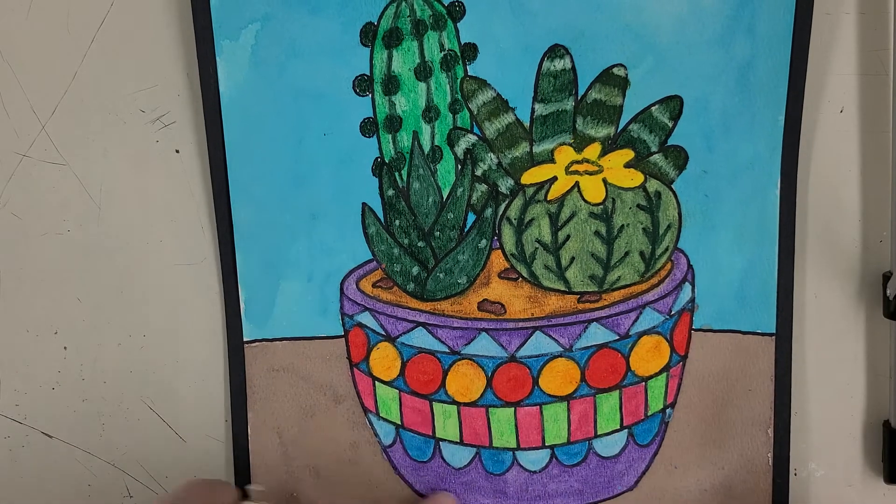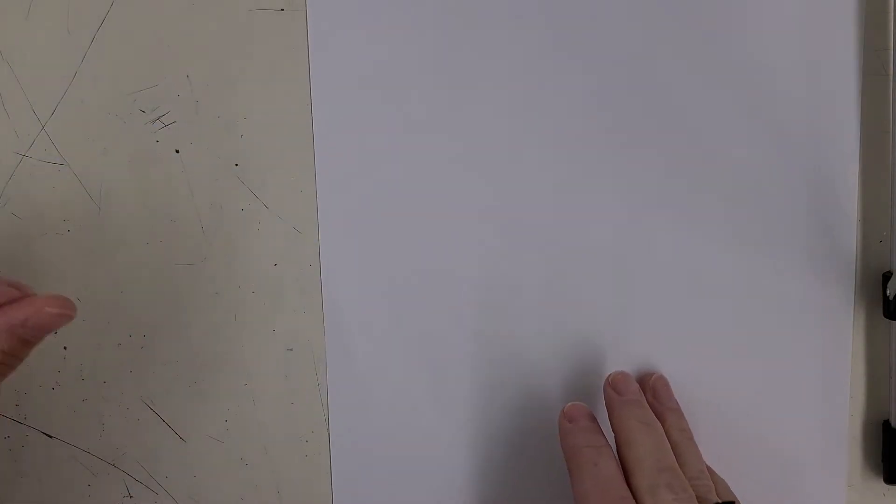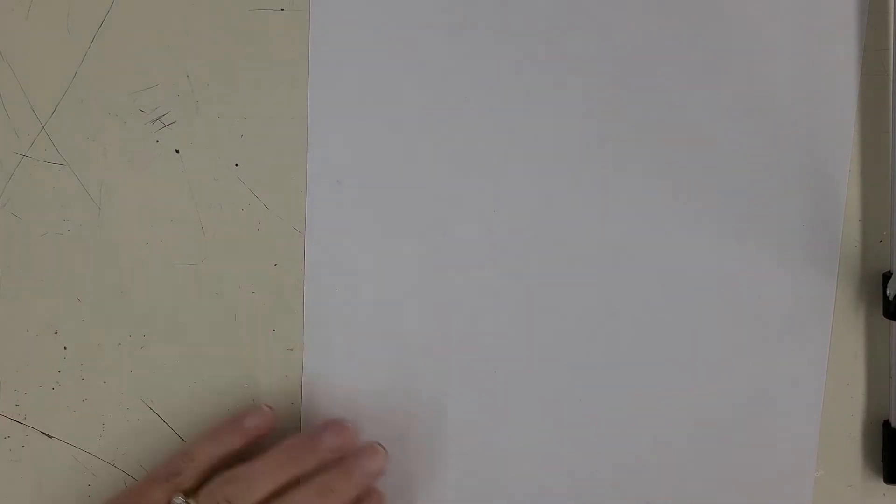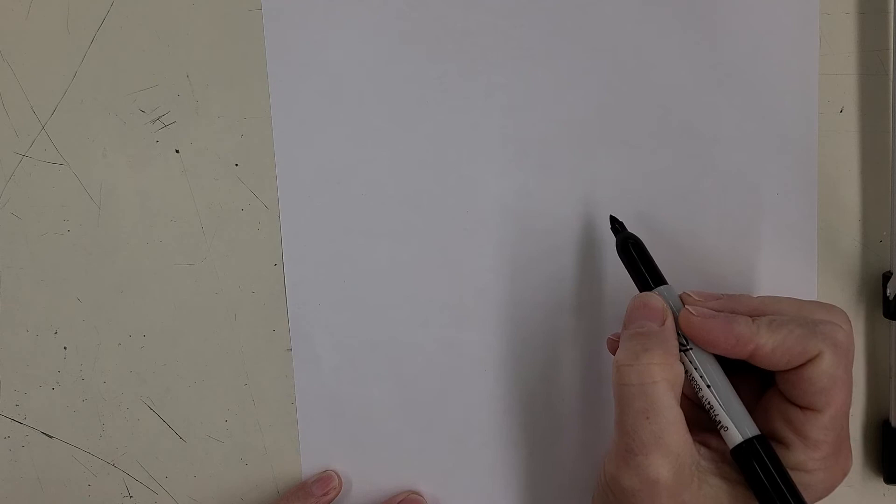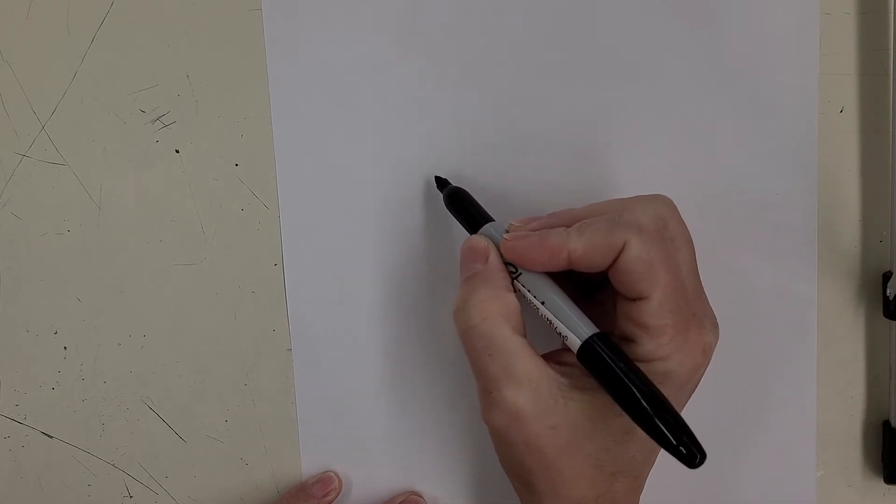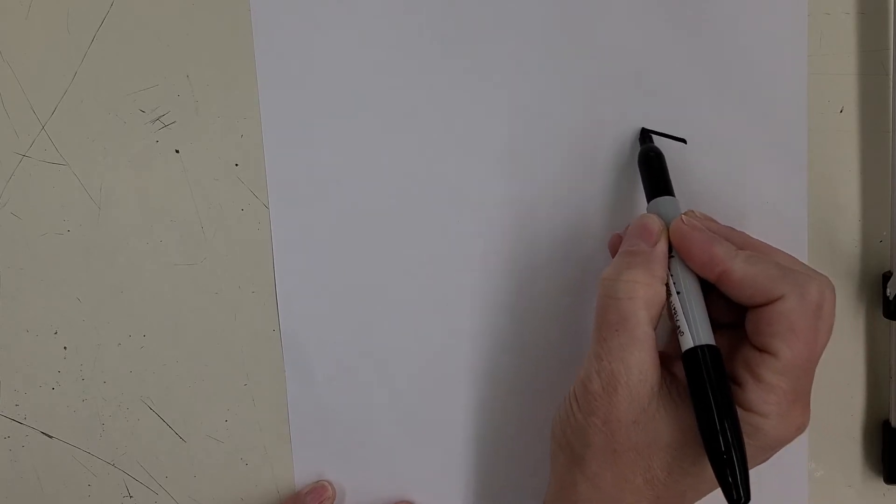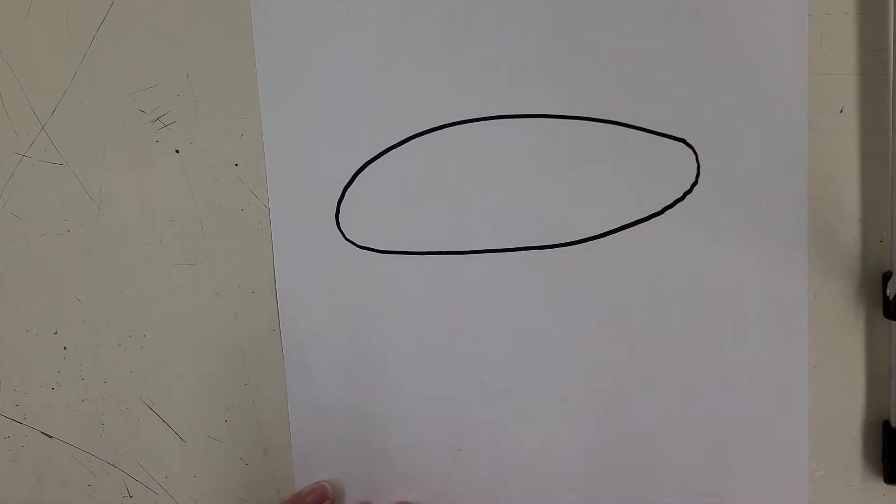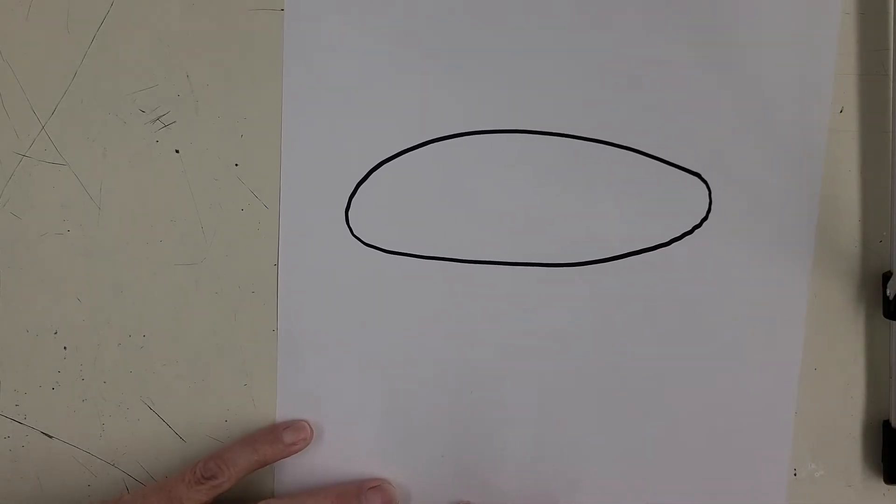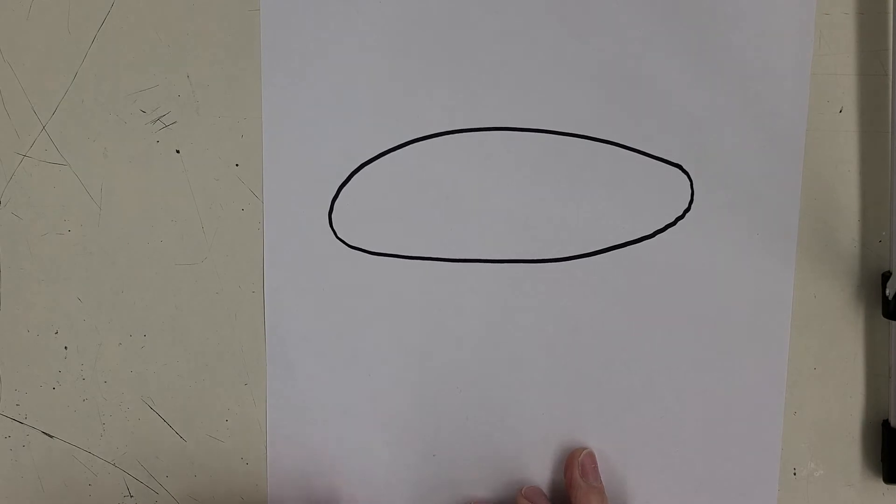I'm going to do this with a sharpie so you guys can all see the lines really clearly. Whenever you're doing this, I always tell my students to start out by drawing kind of a flattened oval, like a pancake. So very simple, it's like an oval tipped onto its side.